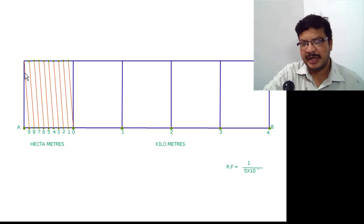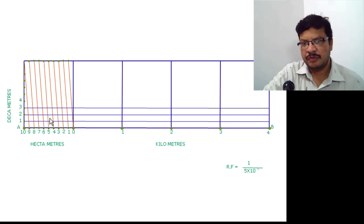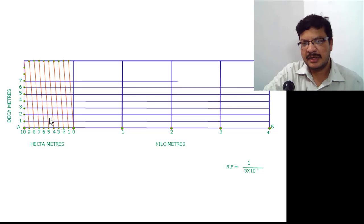Now divide this 50 height into 10 equal parts to get decameters. Because 10 decameters equal to 1 hectometer. Divide this into 10 equal parts. Draw horizontal lines passing through each division: 1, 2, 3, 4, 5, 6, 7, 8, 9, and 10.